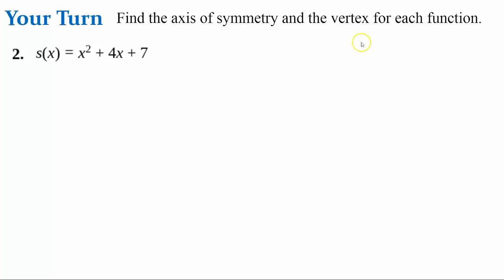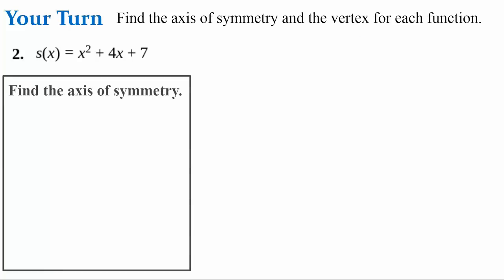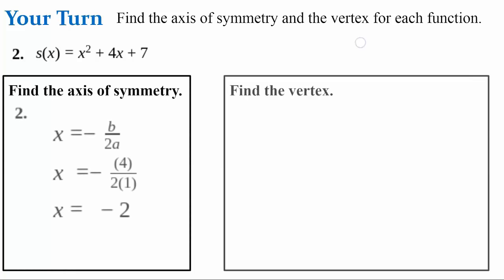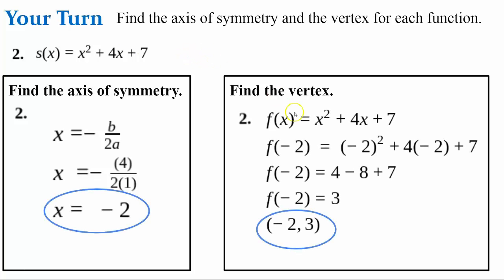For number two, go ahead and find the vertex and axis of symmetry. Pause the video and come back when ready. For the axis of symmetry, we plug in b equals 4 and a equals 1, getting an axis of symmetry of x equals negative 2. We then evaluate the function at x = negative 2 and get a vertex of (negative 2, 3).